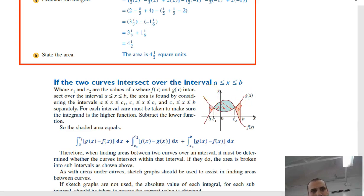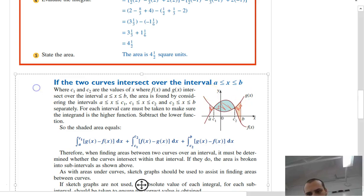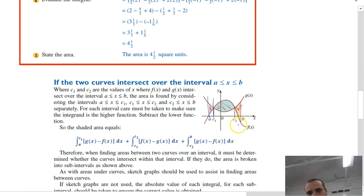Now, from here to here, g of x is on the top. So, if we want to find the area between them, but from there to there, we've got to go from c1 to a with top function, which is g of x, minus the bottom function, which is f of x.